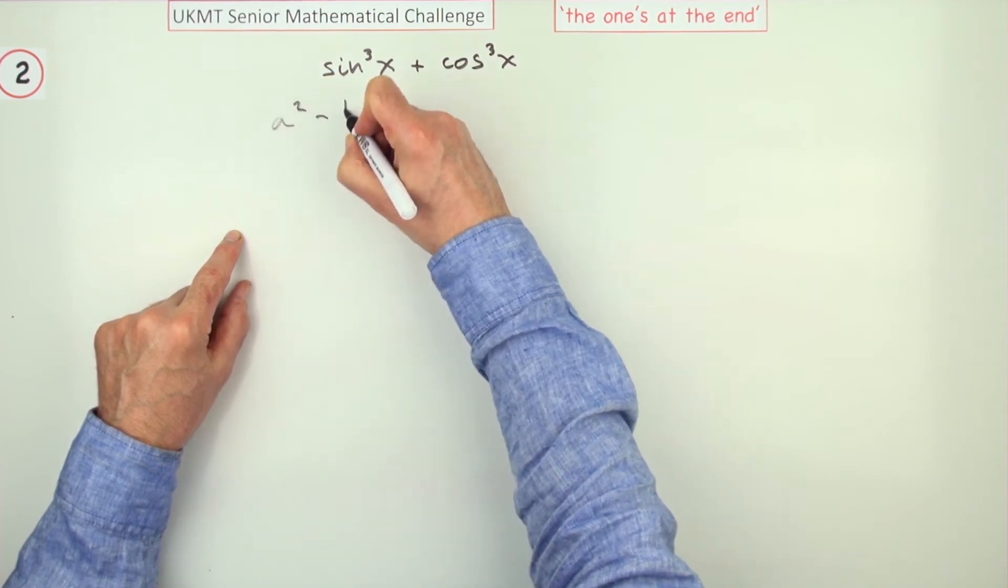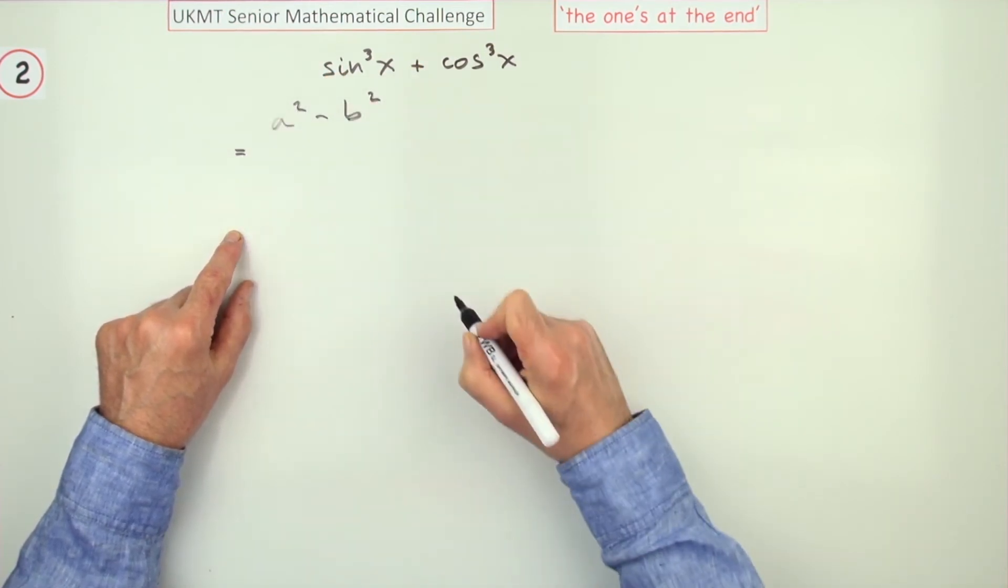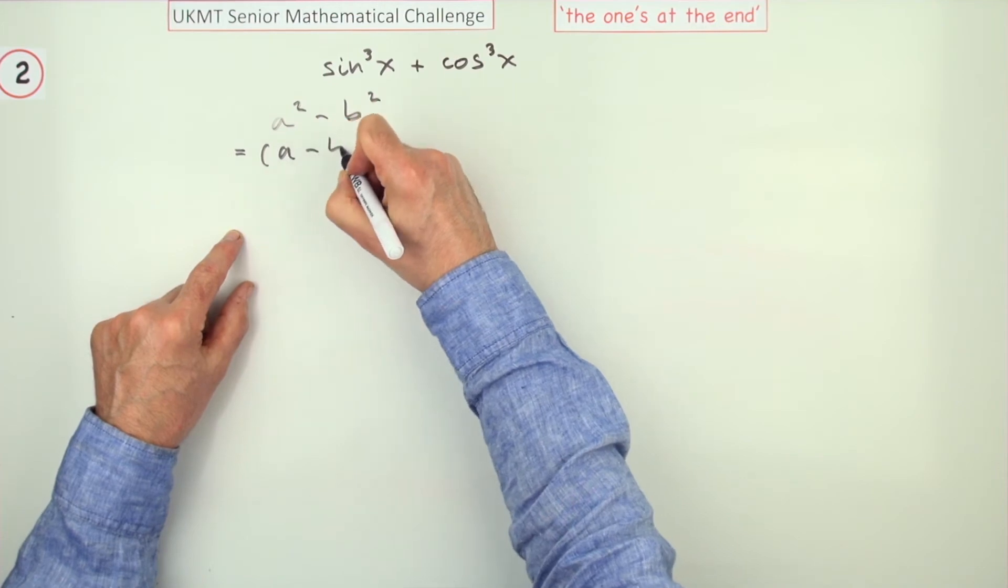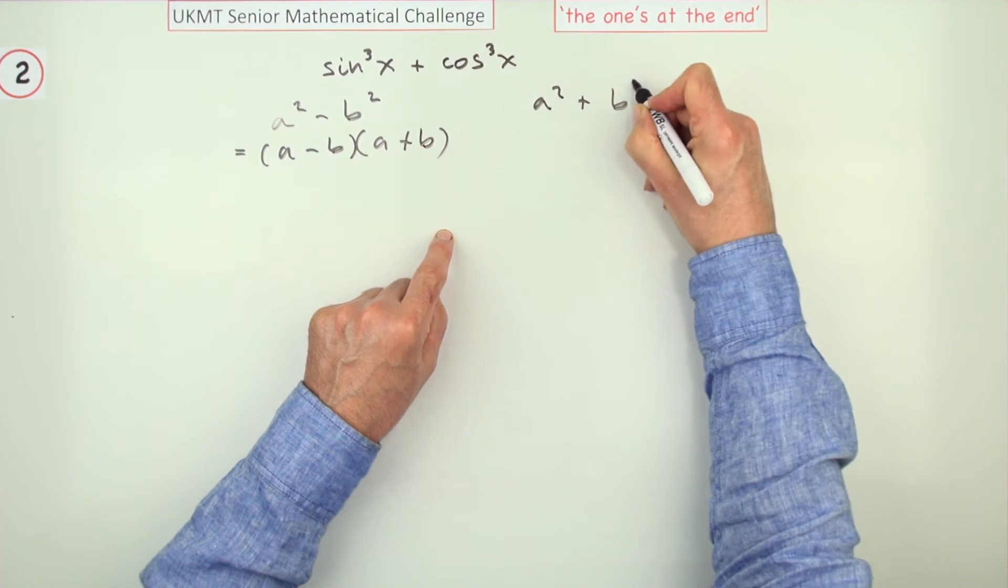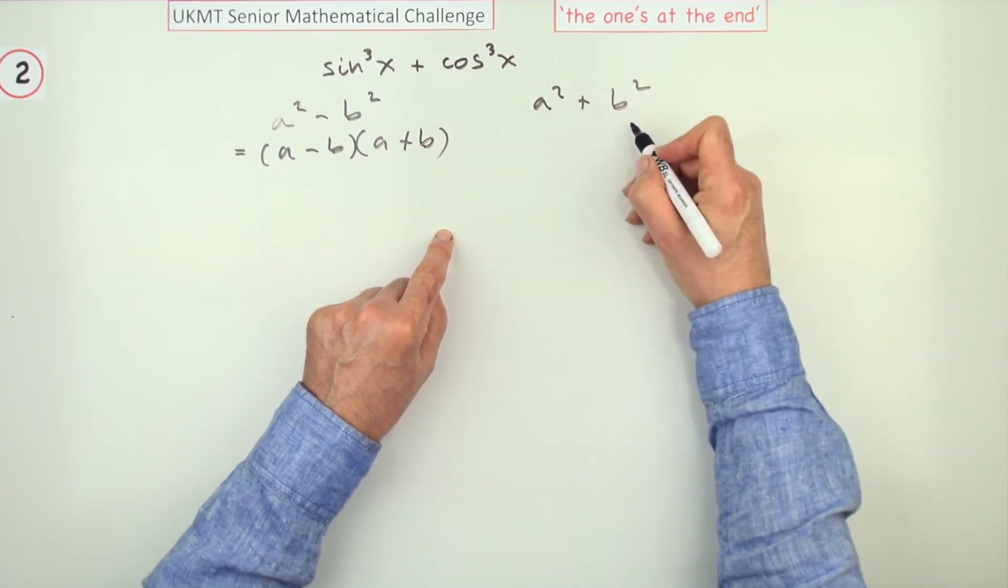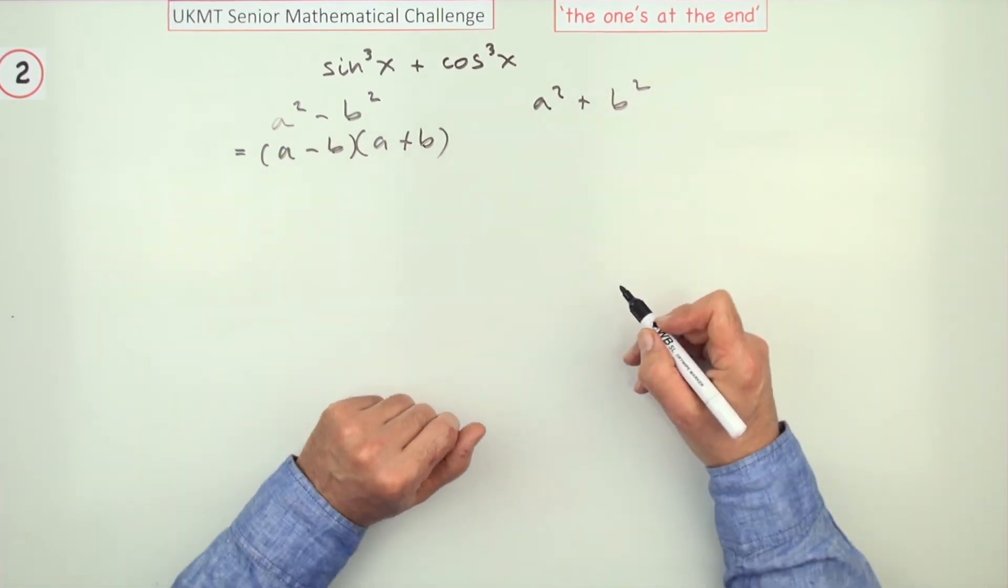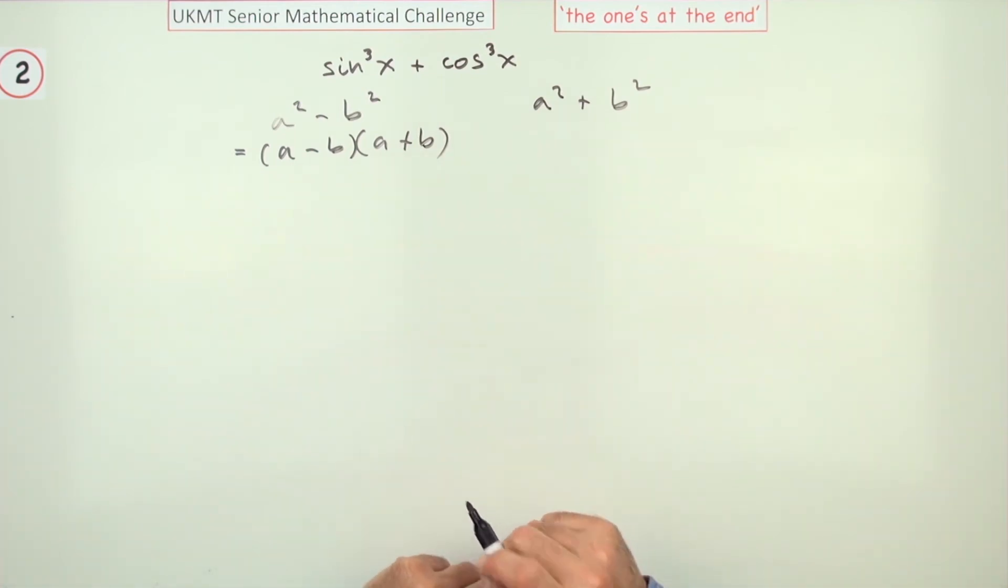Which is if you know your factorizations of some simple expressions. You already know your a squared minus b squared, the difference of two squares, goes to a minus b, a plus b. And you also know that for the corresponding sum of two squares there isn't a factorization involving integers that is.